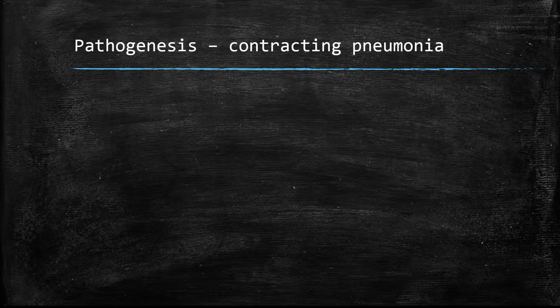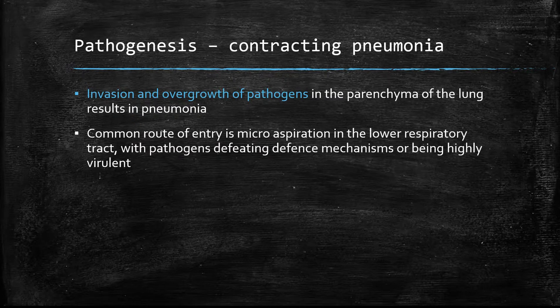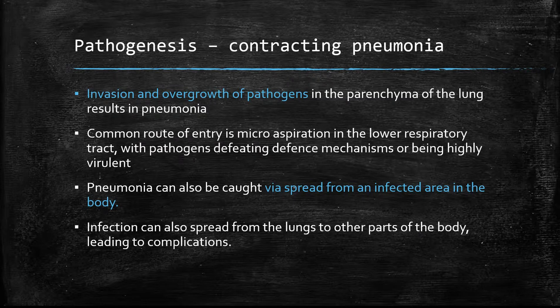Pathogenesis — so how exactly does pneumonia occur? It usually occurs because of an invasion and overgrowth of pathogens. We have different defense mechanisms, but when these are overrun we develop pneumonia, or if the pathogen is especially virulent. A common route of entry is microaspiration into the lower respiratory tract. Pneumonia can also be caught by spread from an infected area in the body, and the infection in the lungs can also spread to other parts of the body, leading to complications.